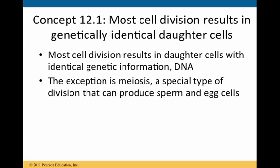Concept 12.1 is as follows: most cell division results in genetically identical daughter cells. You must understand that most cell division results in daughter cells that are going to have identical genetic information in the form of DNA — deoxyribonucleic acid. An exception to this rule is meiosis, a special type of division that can produce both sperm and egg cells.